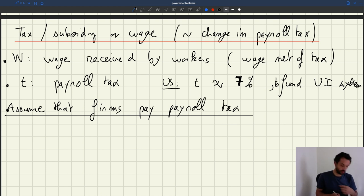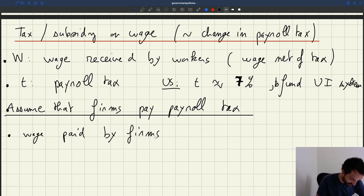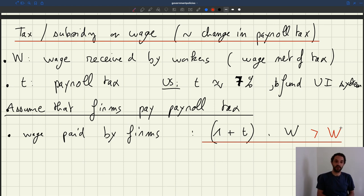The worker has to receive W, but you also have to pay a tax T on the wage. So the wage paid by firm is going to be 1 plus T times W, because anytime they pay W they have to pay that extra tax T on it, where T is the payroll tax. And of course the key thing is that that wage is bigger than just W. So firms have to pay a higher wage than they would without the tax.